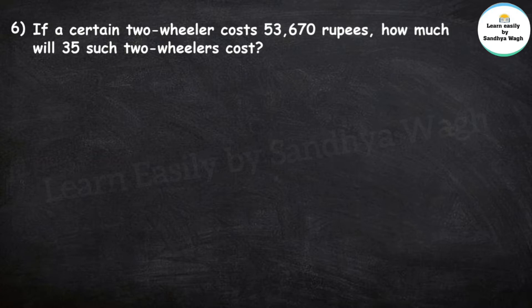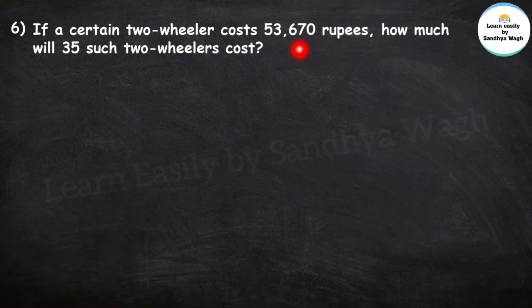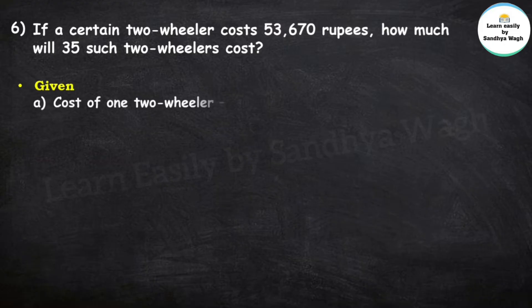Question: If a certain two-wheeler costs 53,670 rupees, how much will 35 such two-wheelers cost? So the given information is: cost of one two-wheeler is 53,670 rupees.